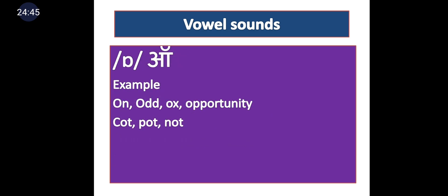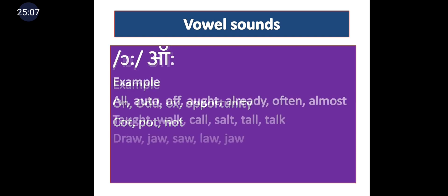The /ɒ/ vowel — an inverted A in the slant bar. Examples: on, odd, ox, opportunity — remember, at the start of 'opportunity' it is /ɒ/, not 'o.' Finally: cot, pot, not. The inverted symbol in the slant bar gives us the /ɒ/ sound.